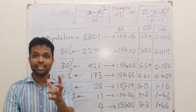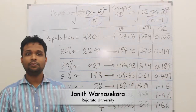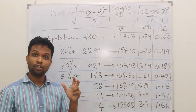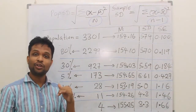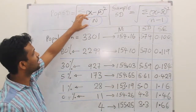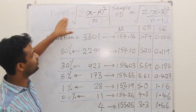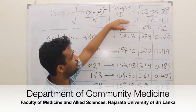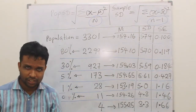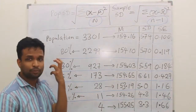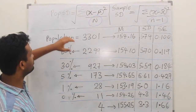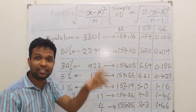Welcome to the lecture on n versus n minus 1. I am using the same example that I used in the previous lecture. If you have not watched the previous lecture, please go and watch it first. Now the question is: why do we use capital N for the population standard deviation, and to calculate sample standard deviation, why do we use n minus 1? I can explain that using the simple example I discussed previously — a population of 3301 pregnant mothers.